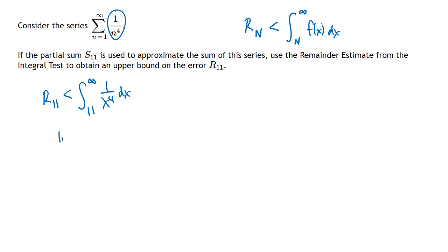The first step whenever we're evaluating an improper integral is to rewrite this as a limit, in this case a limit as t goes to infinity, and we're integrating from 11 to t. We can think of 1 over x to the 4th as x to the minus 4th, so that'll give us our antiderivative, where we add 1 to that power, that's going to be x to the minus 3, and then multiply by 1 divided by that new power, 1 over minus 3. We're going to plug in t, we're going to plug in 11, and subtract.